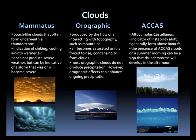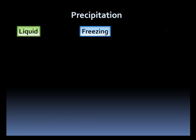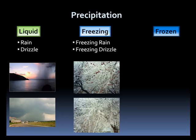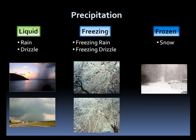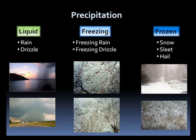Lastly, let's investigate precipitation — what causes it and the varying forms it can take. There are three states that precipitation can take: liquid, freezing, and frozen. Liquid includes rain and drizzle. Freezing includes freezing rain and freezing drizzle. Frozen includes snow, sleet, and hail.